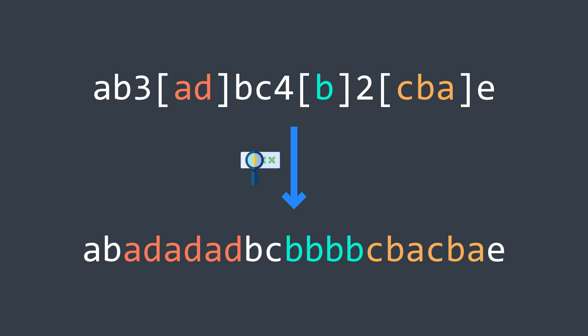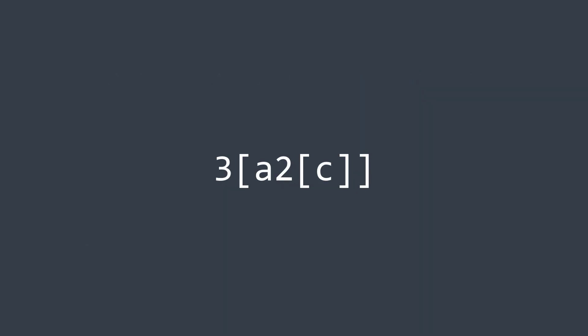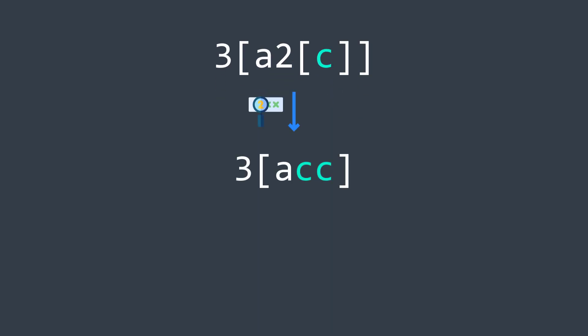But the problem is that we can have nested encoded strings, like 3[a2[c]]. To decode this one, we first need to decode the inner string to get acc, then we can decode the outer string to get acc acc acc.